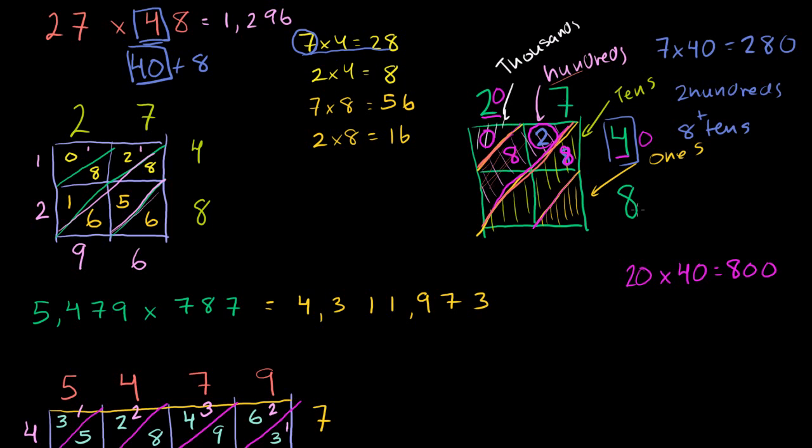Now we can keep going. When you multiply 7 times 8, this is really 7, the 7 in 27, so it's just a regular 7. This is the 8 in 48, so it's just a regular 8. 7 times 8 is 56. You write a 6 in the ones place. 56 is just 5 tens and 1 six. So it's 5 tens in the tens diagonal and 1 six, 56.